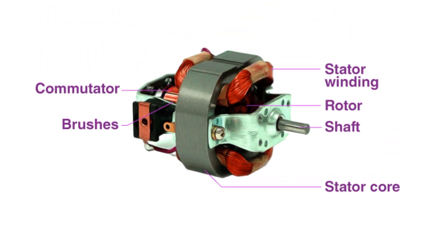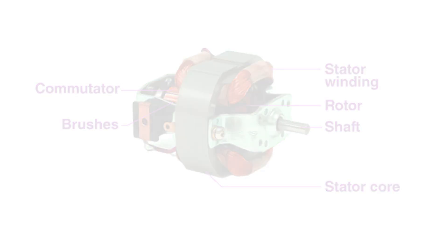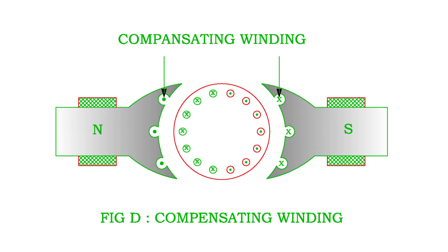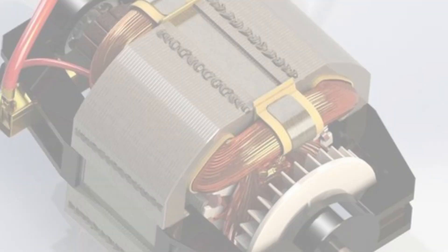The main component of a universal motor is the commutator. The commutator is used to reverse the direction of the current flow in the rotor, which allows the motor to operate on both AC and DC power sources.